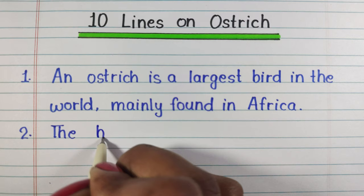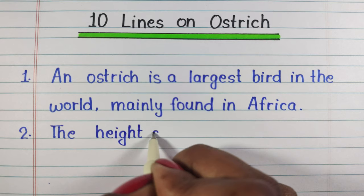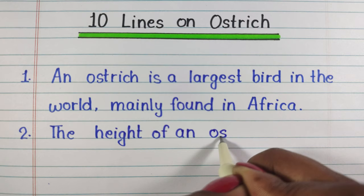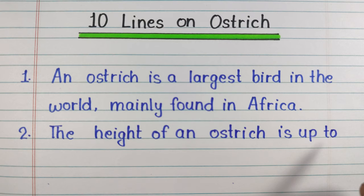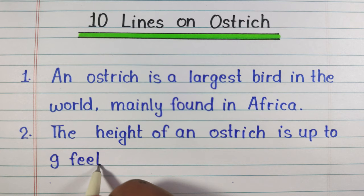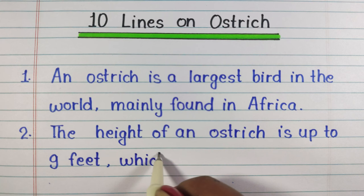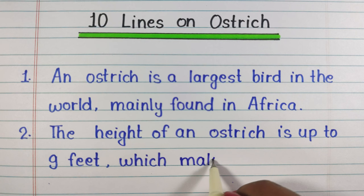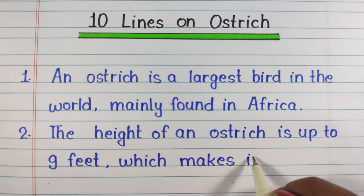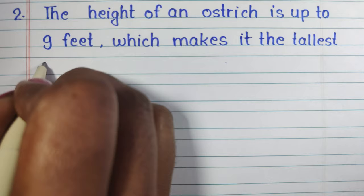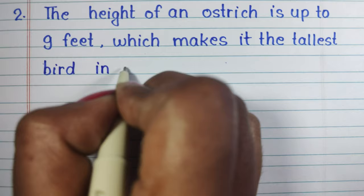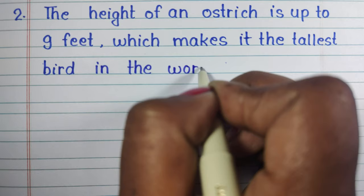Second line: The height of an ostrich is up to nine feet, which makes it the tallest bird in the world.